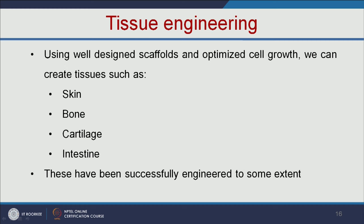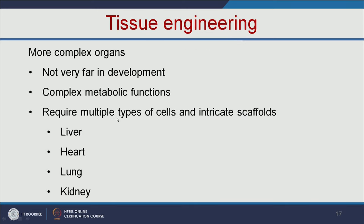Using well-designed scaffolds and optimized cell growth, tissues such as skin, bone, and cartilage have already been successfully engineered. However, complex organs like liver, heart, and lung are still under research because they have complex metabolic functions and require multiple types of cells.